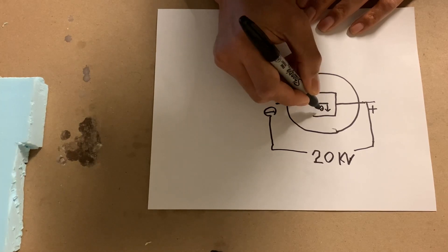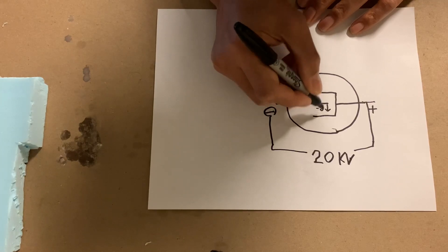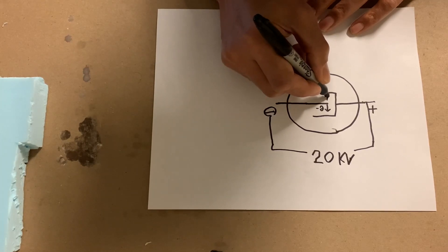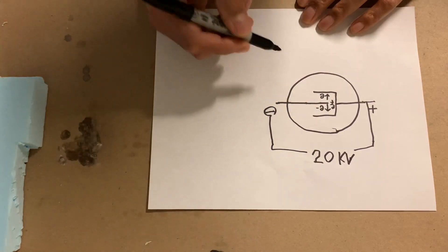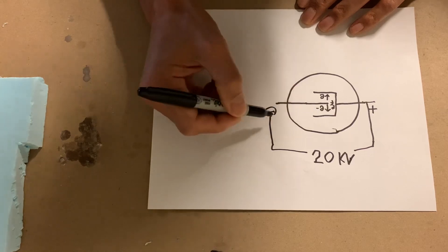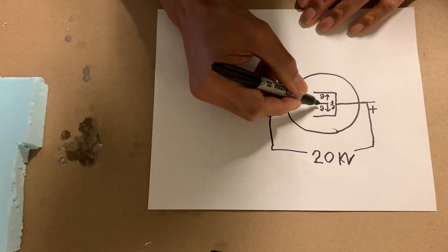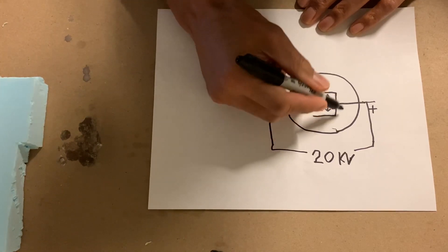So electrons boiling off in all directions and hitting this metal cap. And as they accelerate, they gain energy in this complete vacuum that's inside this tube.